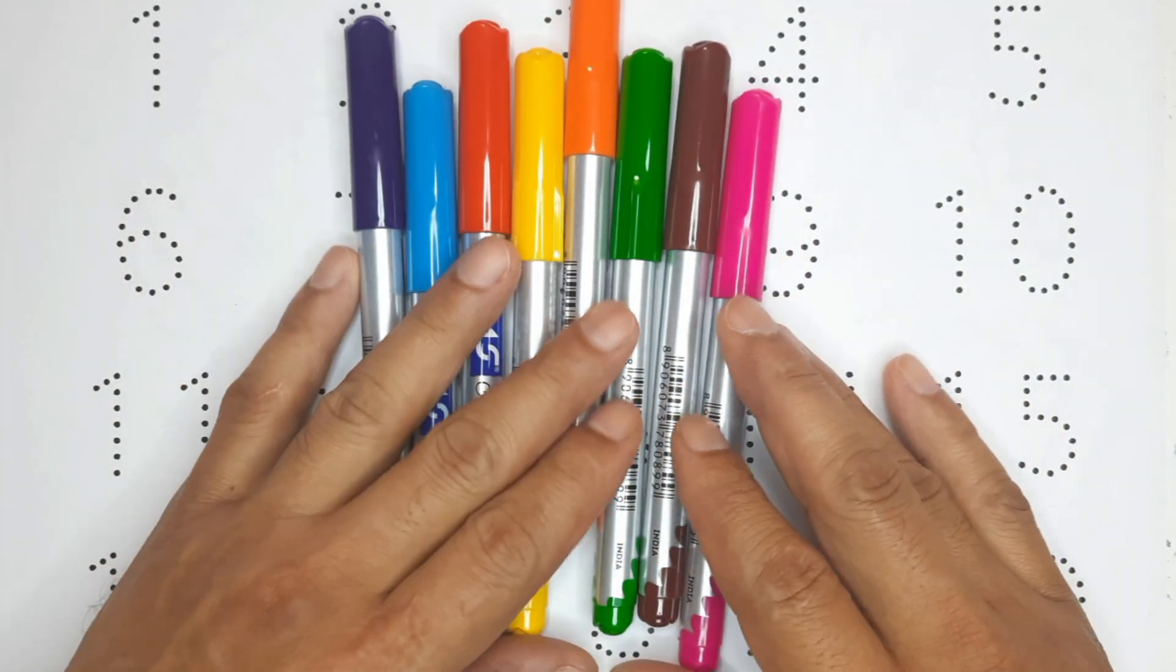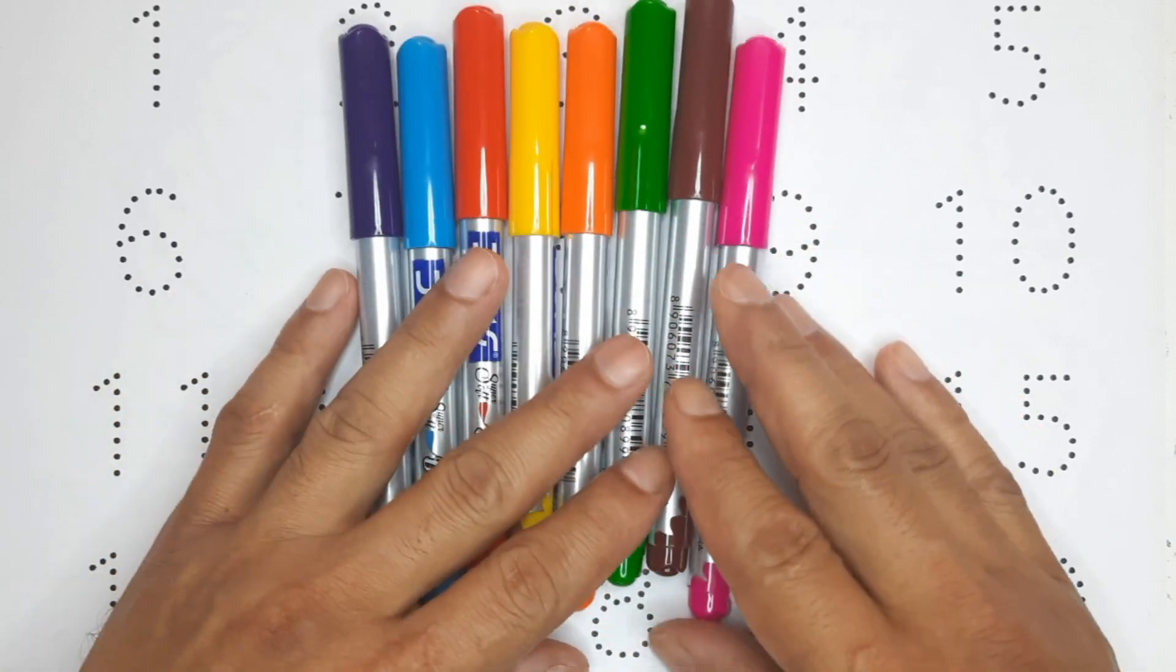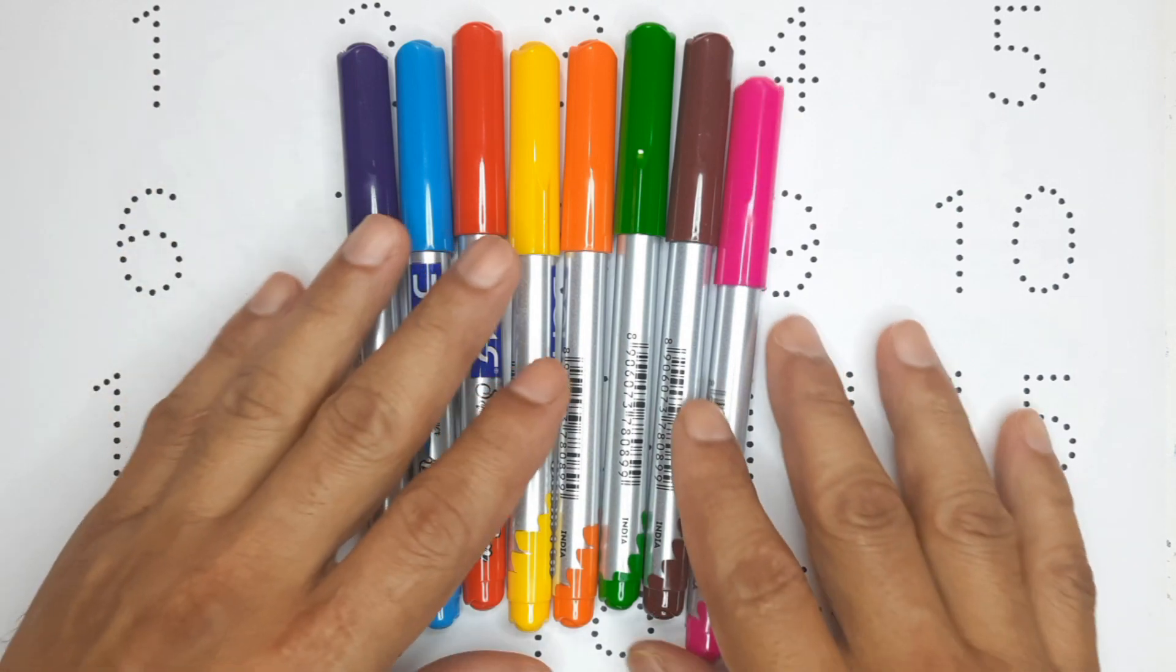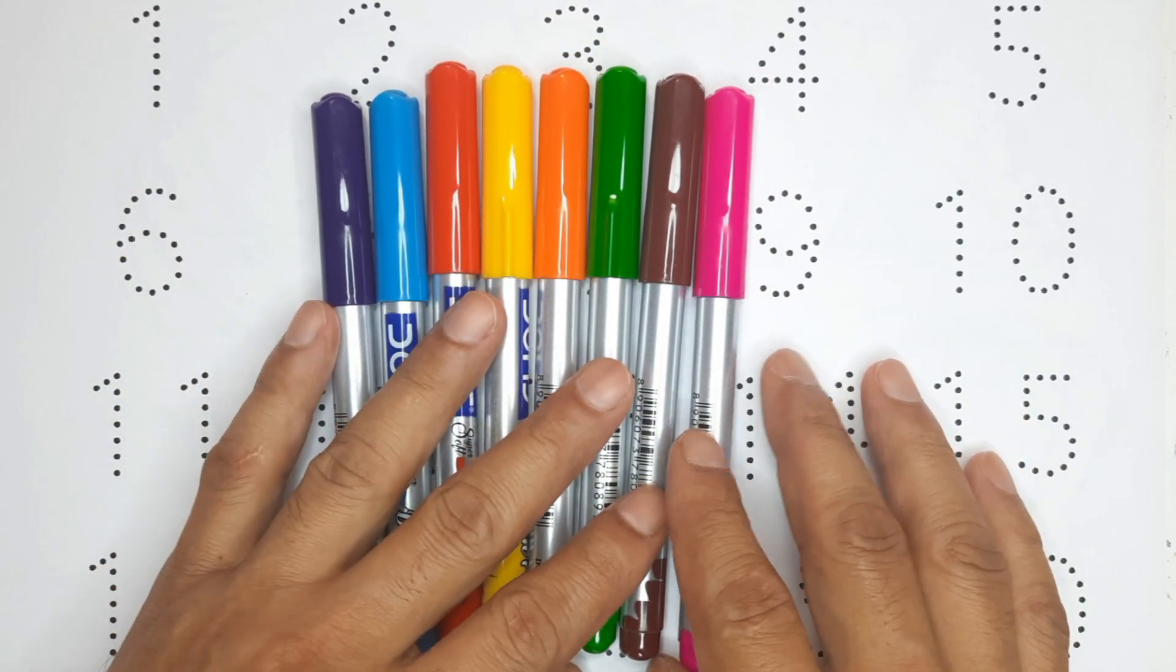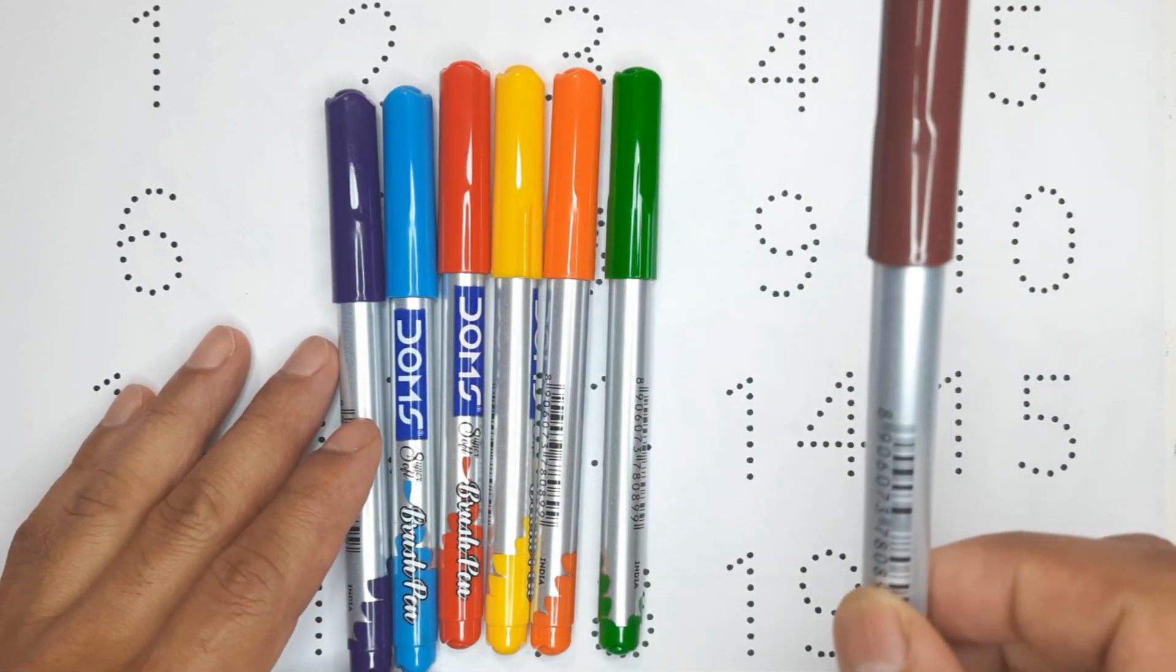Hello kids, welcome to Being a Kid. Today in this video we are going to learn and write the counting numbers 1 to 20. Before we start, let's learn the names of colors: pink color, brown color.